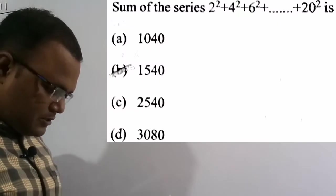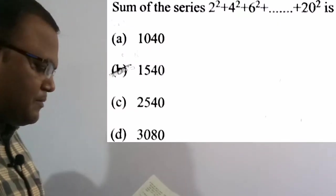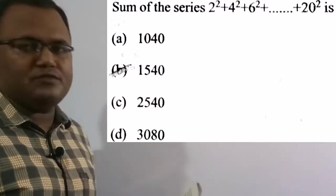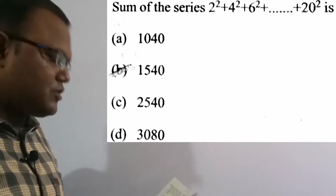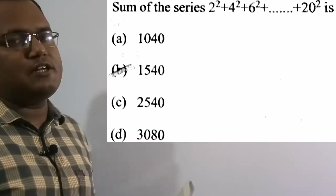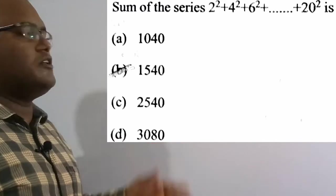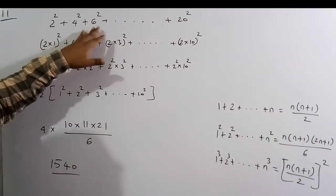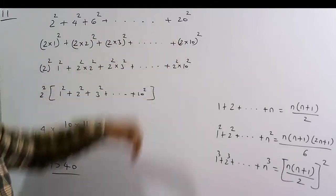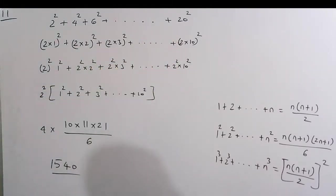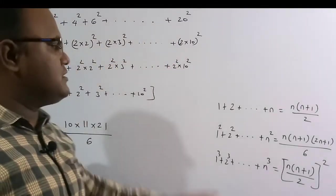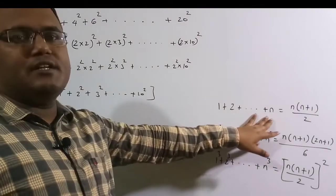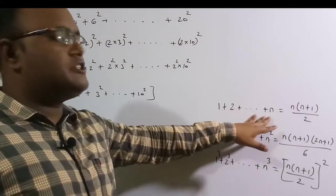Now we are going to solve the 11th question: find the sum of the series 2² + 4² + 6² up to 20². Option B, 1540, is the correct solution. Before solving, let me tell you some important formulas. The sum of consecutive integers 1+2+...+n equals n(n+1)/2.